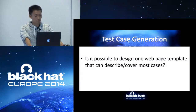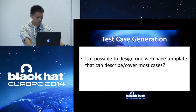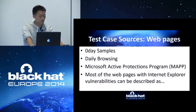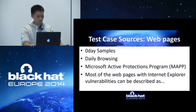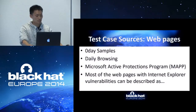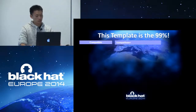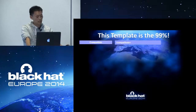The value of this universal template is that it can greatly reduce the complexity of test case generation. So we studied many zero-day samples, daily browsing web pages, and MAPP POCs. We concluded that most web pages with Internet Explorer vulnerabilities can be described with the following template. In the beginning of the template, we have a compatible meta tag, which indicates which version of IE you would like the web page to render as — like IE5, IE7, IE8, IE9. They are slightly different between each version.